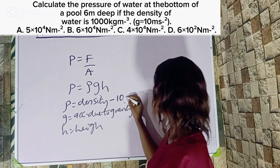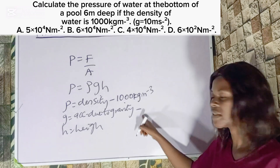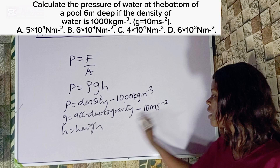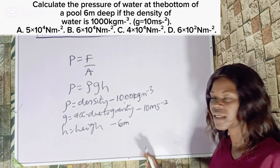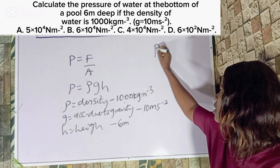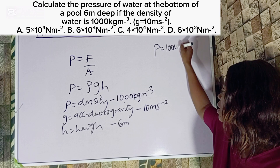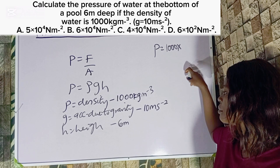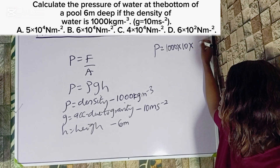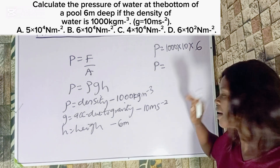We have the density given as 1000 kilograms per meter cube, the acceleration due to gravity g given as 10 meters per second squared, and the height given as 6 meters. We have all the parameters in this question. Pressure equals rho times g times H. My rho is 1000, multiplied by my g which is 10, multiplied by my H which is 6.